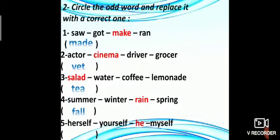The last one: herself, yourself, he, myself. As you see, herself, yourself, myself are reflexive pronouns, but he is subjective pronoun, so it is the odd one, and the replaced one will be any reflexive pronoun, like himself.